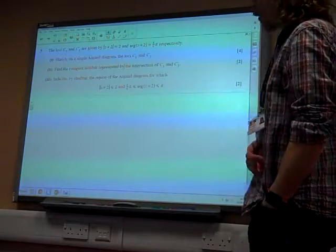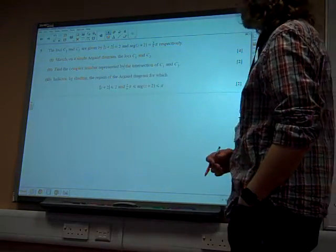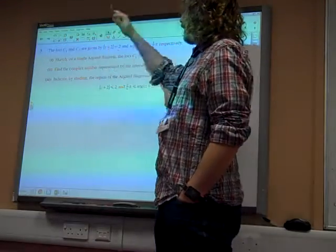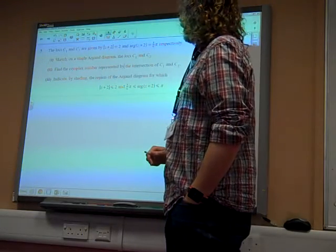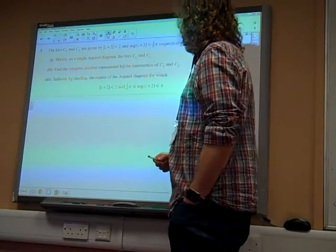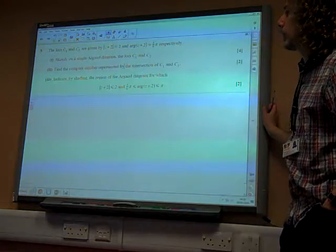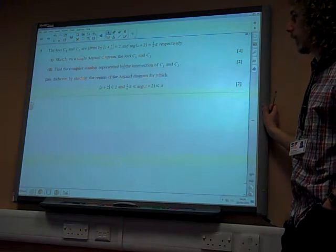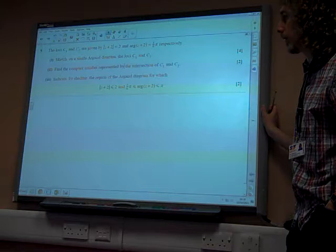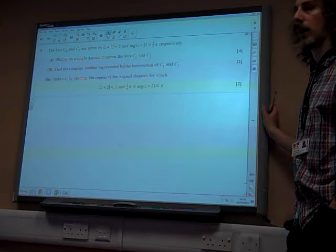Question 5. The loci C1 and C2 are given by the modulus of z plus 2 equals 2, and the argument of z plus 2 equals 5π over 6, respectively. Sketch on a single diagram the loci.